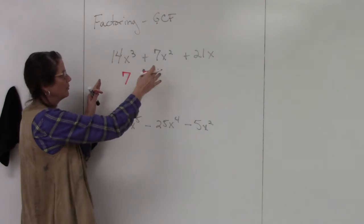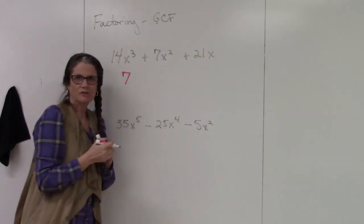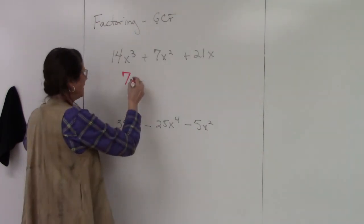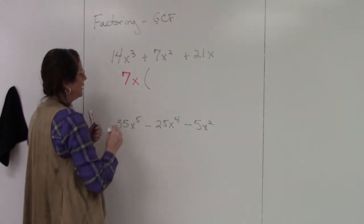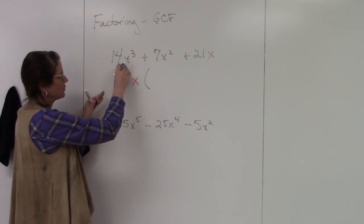Now I look at my variables. I have an x³, x², x to the first. Okay, x to the first is the lowest exponent, so I'm going to take out x to the first. What's left is when I divide this 7x out of each of these terms.